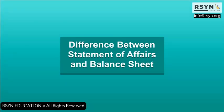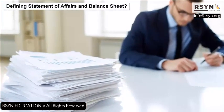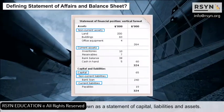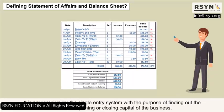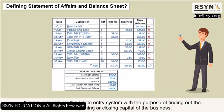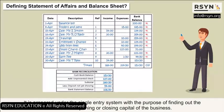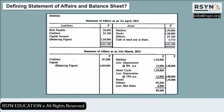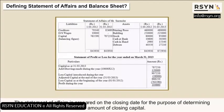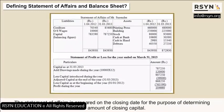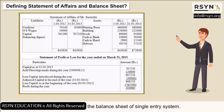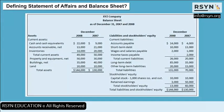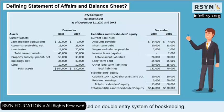Difference Between Statement of Affairs and Balance Sheet: A statement of affairs is known as a statement of capital, liabilities, and assets. It is prepared under the single entry system with the purpose of finding out the amount of opening or closing capital of the business. The statement of affairs is prepared on the opening date to determine opening capital, and on the closing date to determine closing capital. It is also known as the balance sheet of single entry system. A balance sheet, by contrast, is a statement of a company showing assets, liabilities, and equity, based on the double entry system of bookkeeping.